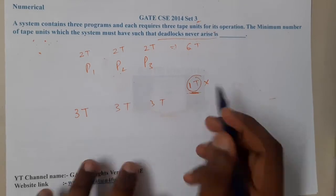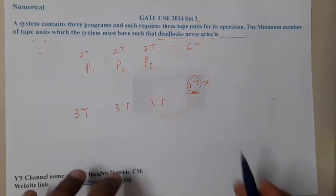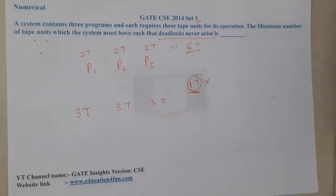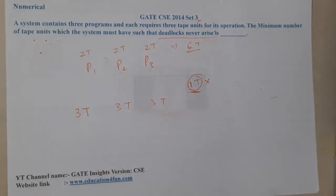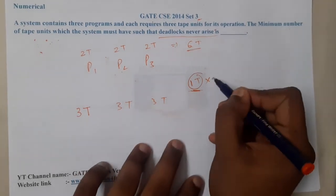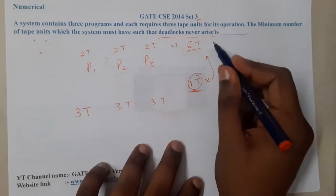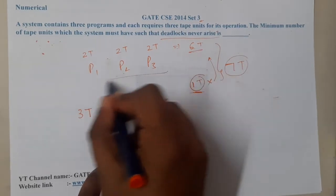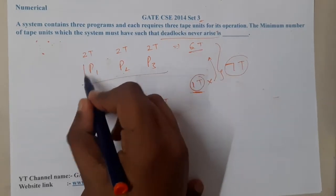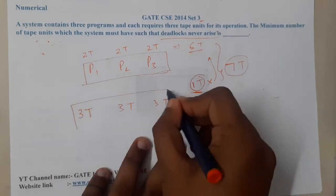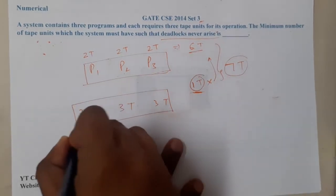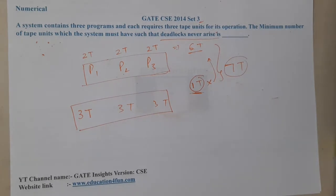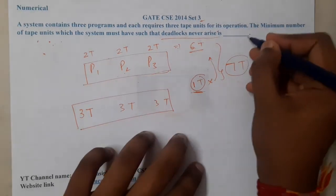Everyone is in deadlock because that tape doesn't even exist. The only solution to remove this deadlock is to add just one more tape. So if we have seven tapes total, we can never form a deadlock with this requirement. There are three processes, each requiring three tapes, so a minimum of seven resolves the deadlock forever.